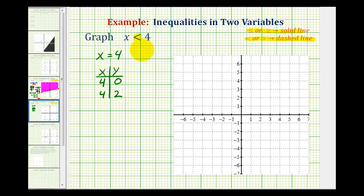So we'll plot these two points and then make a dashed line through those two points. So here's the point (4, 0), and here's the point (4, 2). So we have a vertical line that's dashed that looks like this.